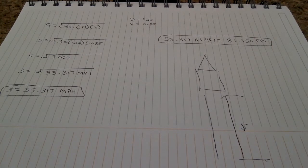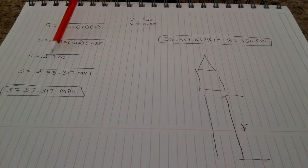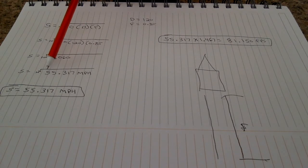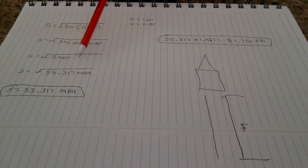So all we're going to do is plug this in now. Speed equals the square root of 30 times distance which is 120 and then times the friction which is 0.85. We're going to multiply this together. You're going to get 3,060. And then we're going to get the square root of that. And the square root of that is going to be 55.317. And that is going to be 55.317 miles an hour.